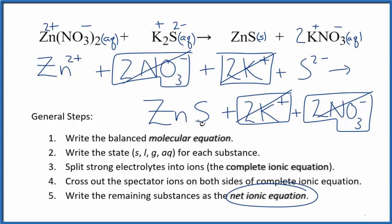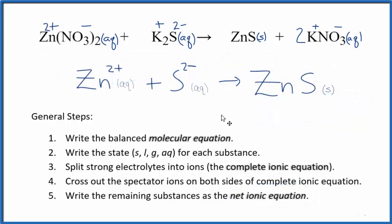I'll clean this up, write the states in. We'll have our net ionic equation. So this is the balanced net ionic equation for Zn(NO3)2 plus K2S. You'll note that charge is conserved. We have a 2 plus and a 2 minus. That gives us a net charge of zero. And then over here, this is a neutral compound, net charge of zero.